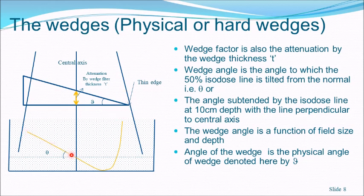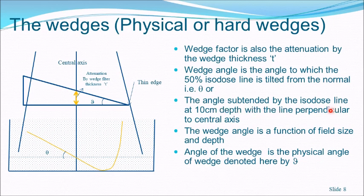Thus the isodose line is tilted to an angle. Physical wedges are normally provided in four common angles: 15, 30, 45, and 60 degrees. The wedge angle is the angle to which the isodose line is tilted from the normal. This tilt varies with depth, so the question is at what depth to measure the wedge angle. Older definition used the tilt of the 50% isodose line; currently, the wedge angle is defined as the angle subtended by the isodose line at 10 cm depth with the line perpendicular to the central axis.